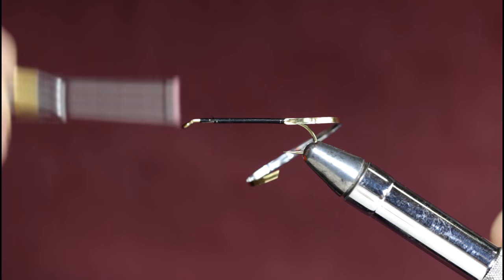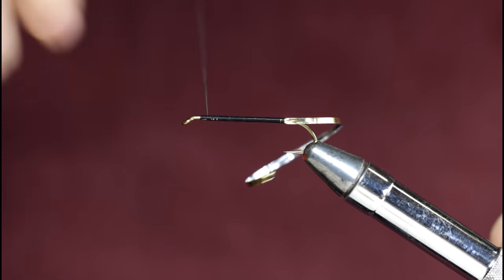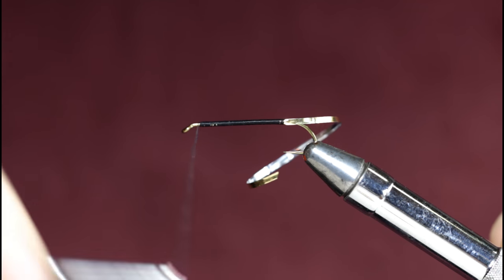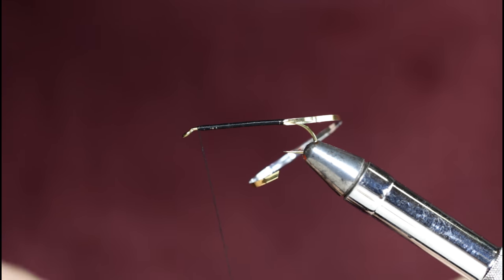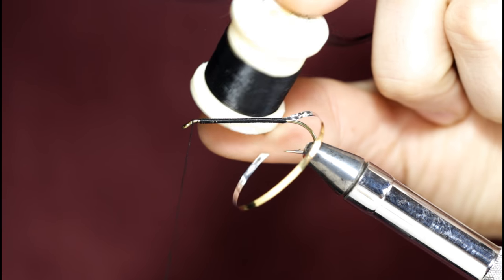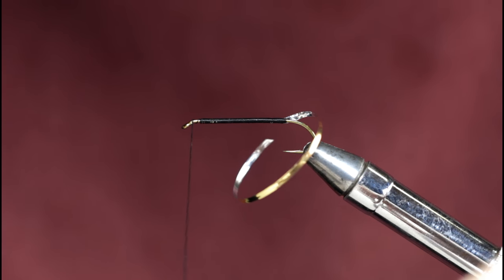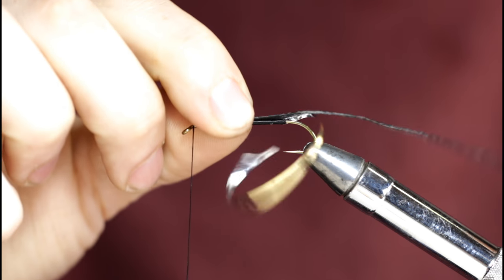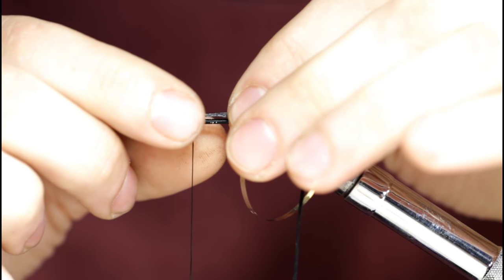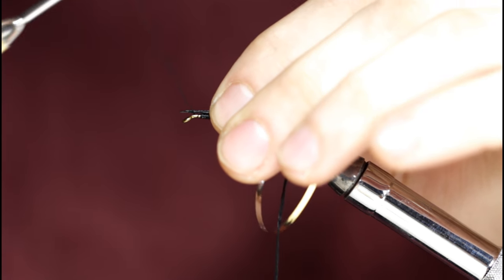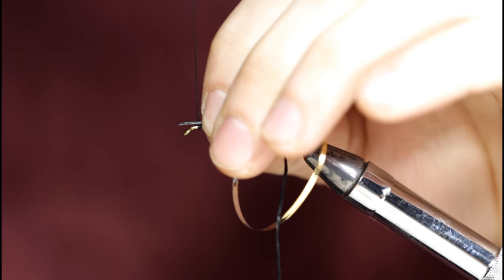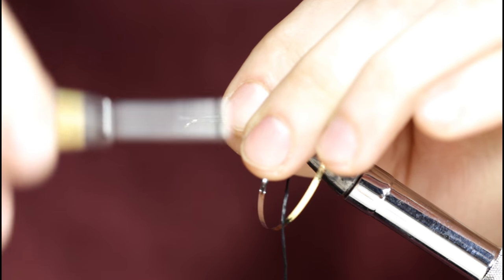Once I get up here I'm going to grab some black floss. This is a four strand black floss. I'm just going to tie this in, a little bit of overhang that I'll snip off after. It just helps to tie in if you leave a little bit of extra.